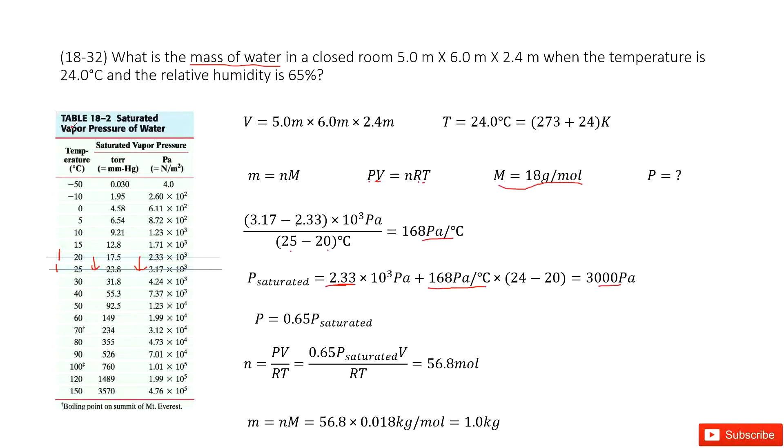But this one is not saturated, it is with humidity 65%. So we use 0.65 times 3000, we get the pressure for this case.